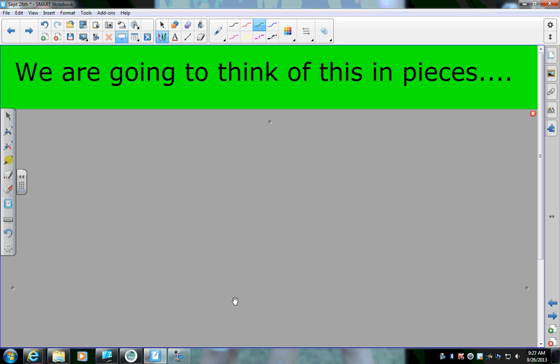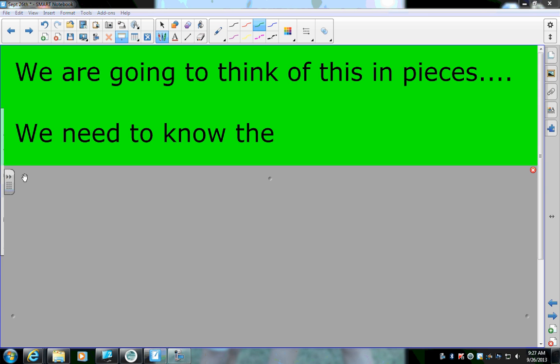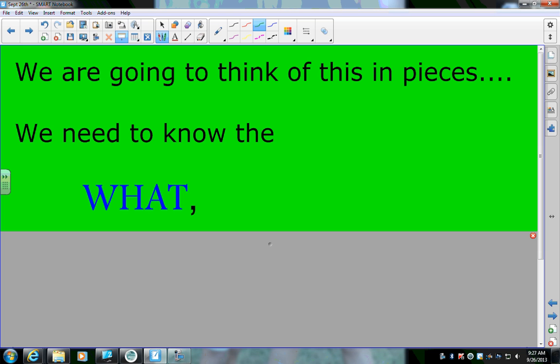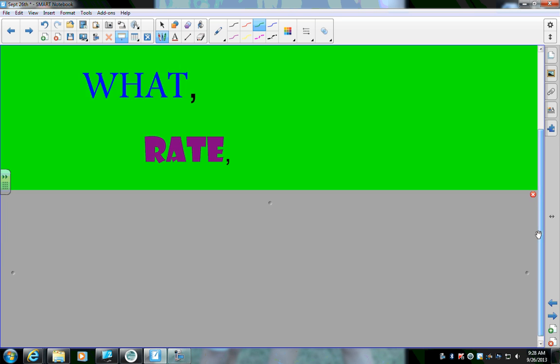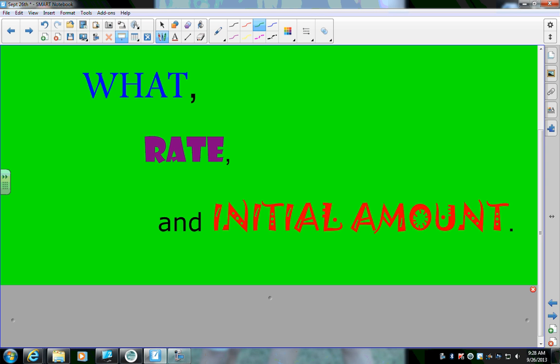Now, on the front side of your paper, it says we're going to think of these in pieces. So the parts, what you need to know on your paper, you need to write down. We need to know the what. What are we trying to find when we're talking about a word problem? What is the rate? That rate of change is very important. That's that number that goes with your x. The other thing you need to figure out is the initial amount. That initial amount is very important because it's what you're beginning with. It's the thing that you're starting with before things happen.